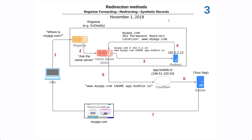In this example, your app used to be on myapp.com, but you want to get it working with standard record sets. So we assume that you've already redirected your app to www.myapp.com.